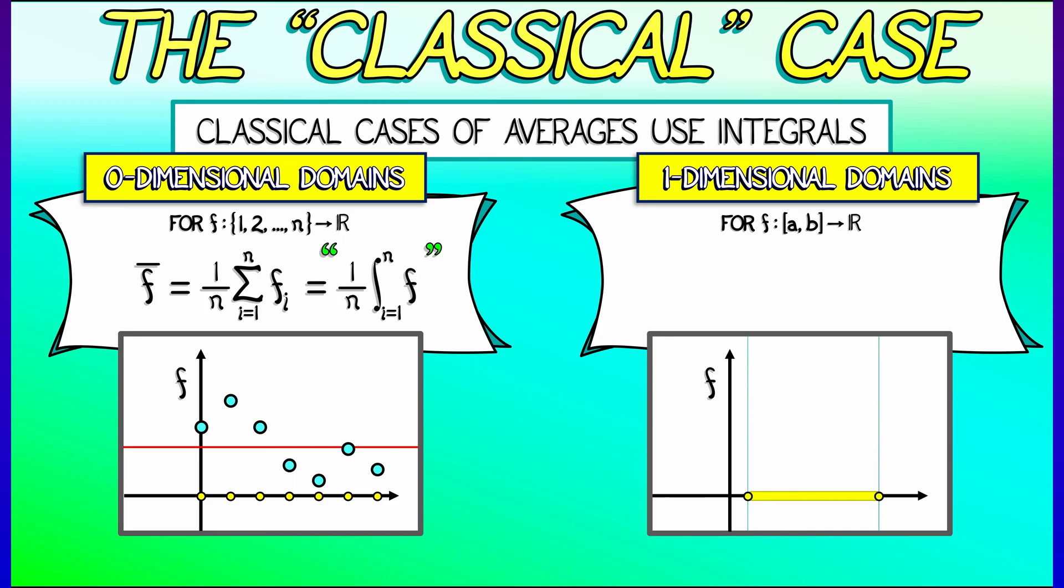And looking at a classical average of a function from the interval a to b, in which case you integrate the function, you add up all the values, and you divide by the size of the interval. That is, you're normalizing by that quantity b minus a.